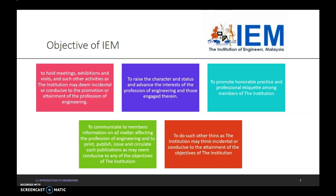Third, to promote honorable practice and professional etiquette among members of the institution. Fourth, to communicate to members information on all matters affecting the profession of engineering, and to print, publish, issue and circulate such publications as may seem conducive to any of the objectives of the institution. And the last one is to do such other things as the institution may think incidental or conducive to the attainment of the objectives of the institution.